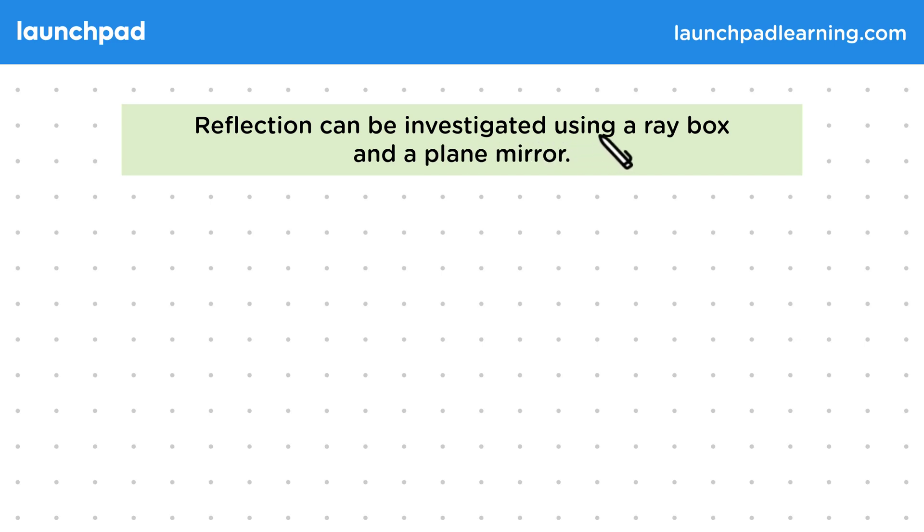Reflection can be investigated using a ray box and a plain mirror. Remember that reflection is when a wave reaches a boundary between two different media and then bounces off it. We can investigate this using a mirror and a ray box.